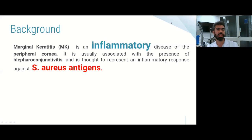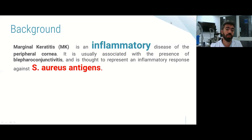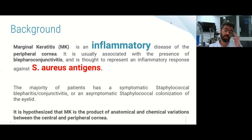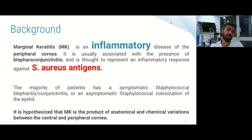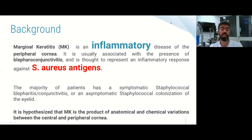Regarding background, marginal keratitis is an inflammatory disease of the peripheral cornea, usually associated with the presence of blepharococcal conjunctivitis. It represents an inflammatory response against staphylococcal antigens. The majority of patients have symptomatic staphylococcal blepharitis or conjunctivitis in association, though it can also be an asymptomatic colonization. It's hypothesized to be the product of anatomical and chemical variations between the central and peripheral cornea.